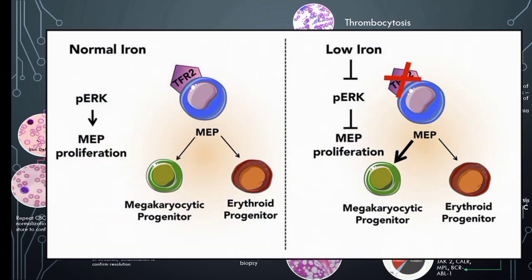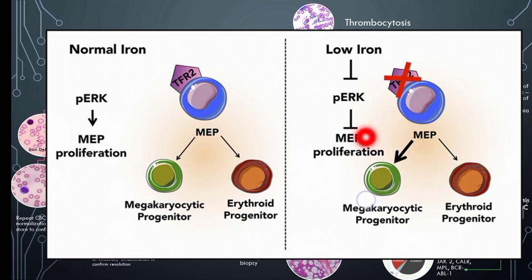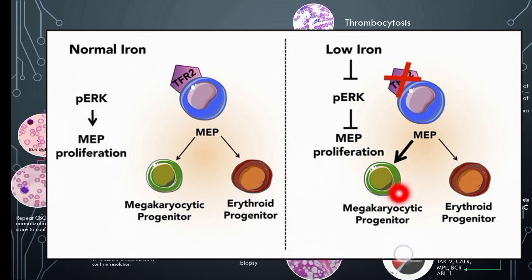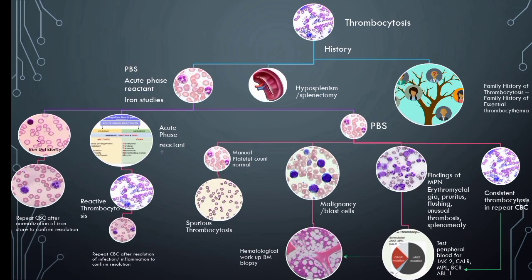This picture shows the mechanism of increased platelet count in iron deficiency anemia. Low iron in the marrow environment affects the megakaryocytic-erythroid progenitors. Other causes of reactive thrombocytosis include infection, inflammation, tissue damage, and hemolytic anemia.